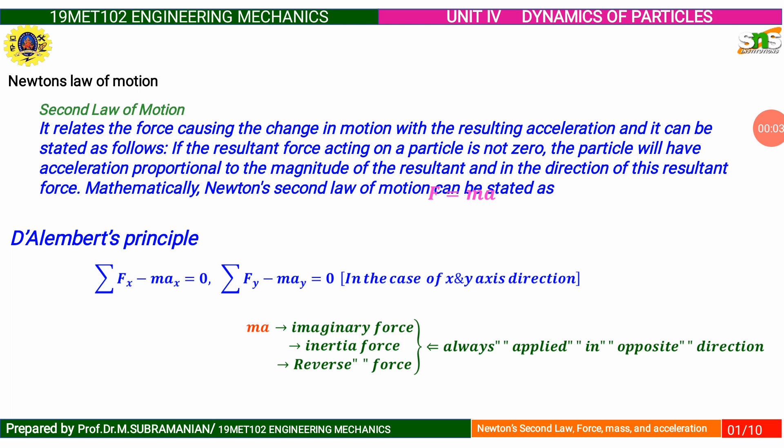Example Problem: Two blocks of weight 150 Newton and 50 Newton are connected by a string passing over a frictionless pulley as shown in the figure. Determine the acceleration of the blocks and the tension in the string. The weight of the blocks is 150 Newton and 50 Newton. The acceleration of these two blocks will not be equal because the 50 Newton block is supported by a single string, but the 150 Newton block is supported by two strings — one on either side. Hence, the acceleration of the 50 Newton block is twice the acceleration of the 150 Newton block.